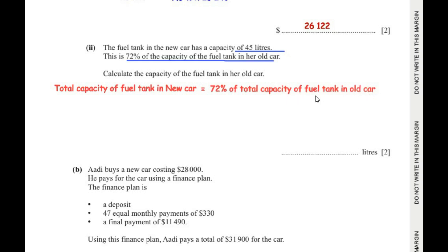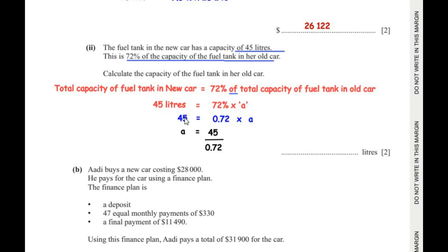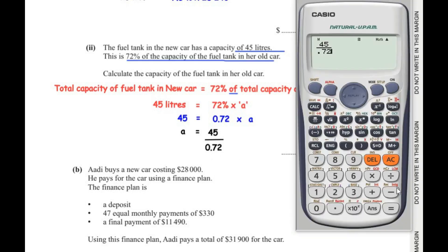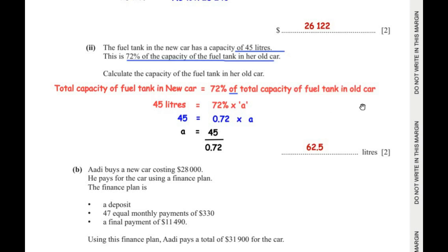We do not know what the capacity of the old car is, but the total capacity of the new car is 45 liters. So we write: 45 = 72% of A, where A is the capacity of the old car. Simplifying: 45 = 0.72 × A. Taking 0.72 to the other side: A = 45 ÷ 0.72, which gives us 62.5 liters. That is the capacity of the fuel tank in the old car.